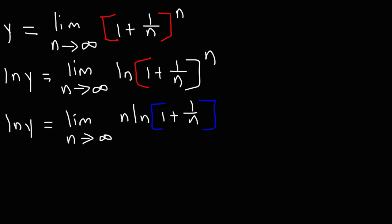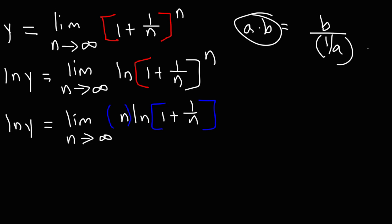We still have more work to do. Right now we have the product of two expressions: n times ln(1 plus 1 over n). We need to convert this from a product of two expressions to a quotient of two expressions. We can do that because a times b is equal to b divided by 1 over a, converting a product into a quotient.